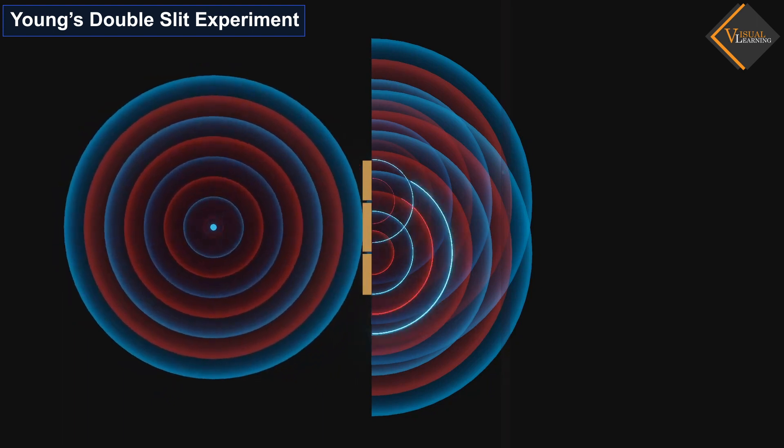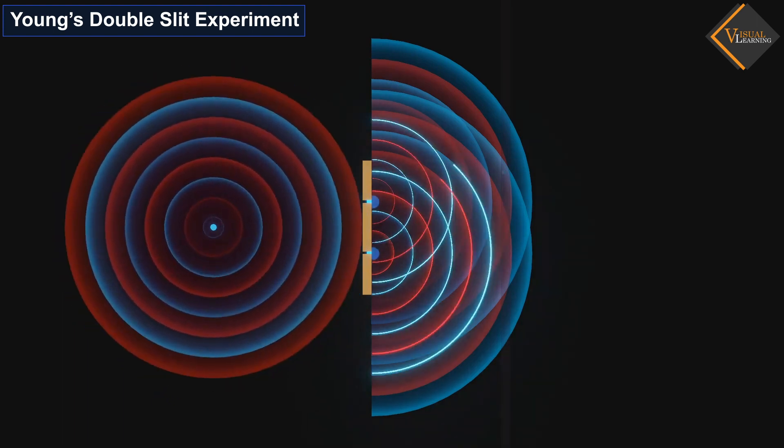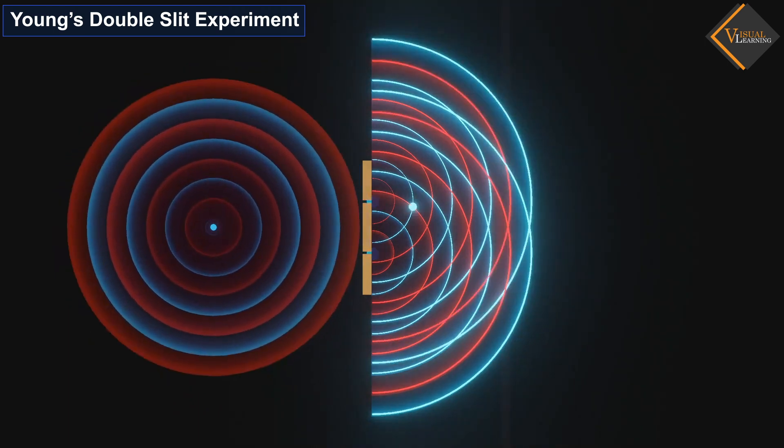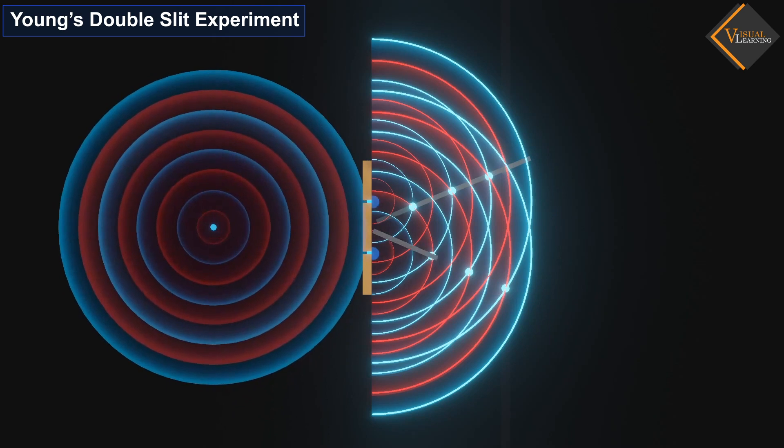Here is the complete interference pattern of Young's double slit experiment. This phenomenon is called the interference of light.